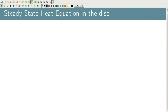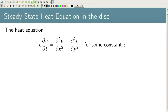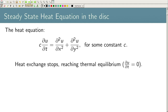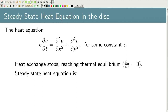The heat equation is given by ∂u/∂t = c(∂²u/∂x² + ∂²u/∂y²) for some constant c. When heat exchange stops — reaching thermal equilibrium — that means ∂u/∂t = 0, and this is called the steady state equation, given by ∂²u/∂x² + ∂²u/∂y² = 0.